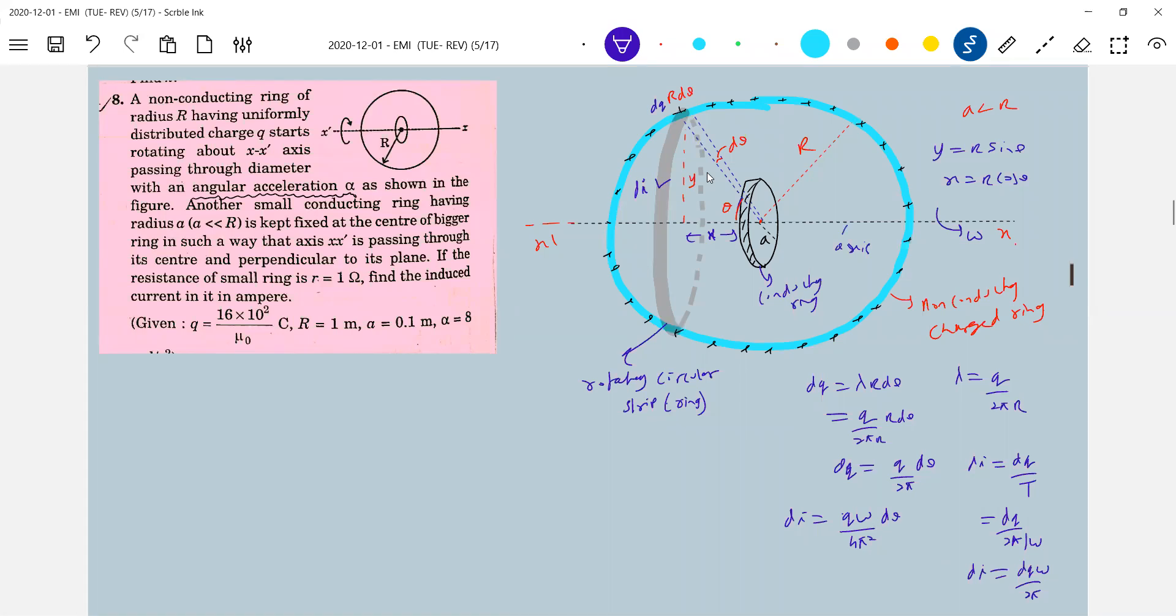Some of you understand diagram, rest of mathematics is very easy. So I'll make this problem. Let it be, now here is what current i? di, we know. Radius, it is y. Can you calculate the magnetic field?